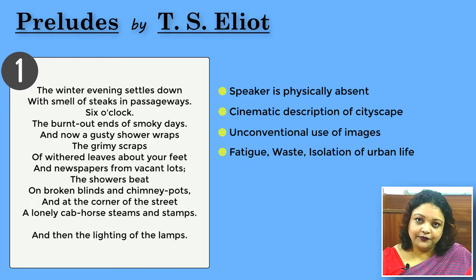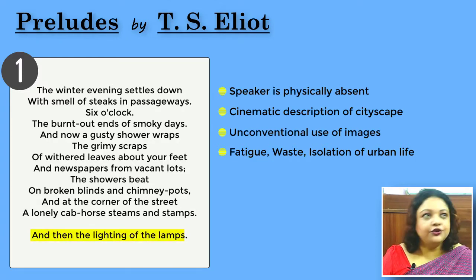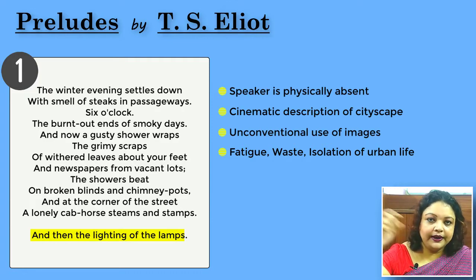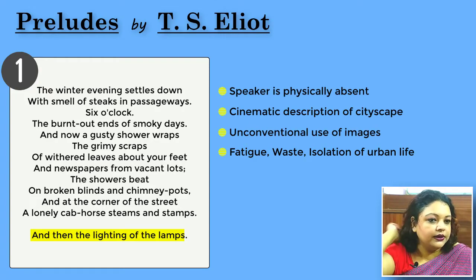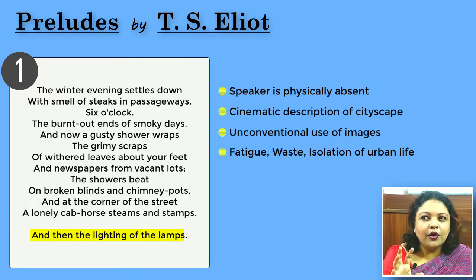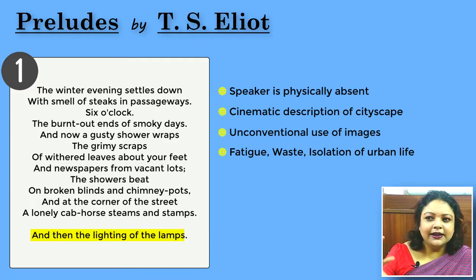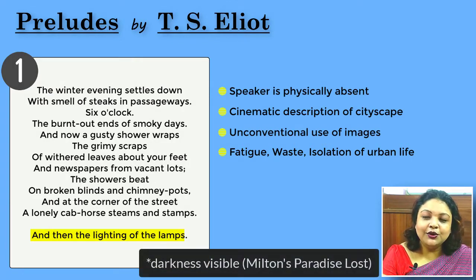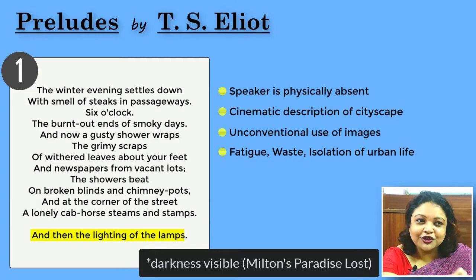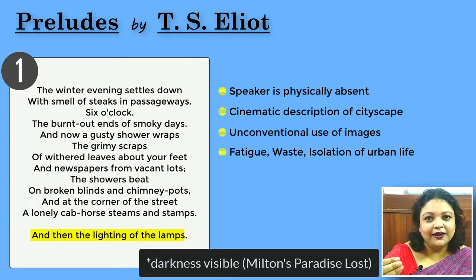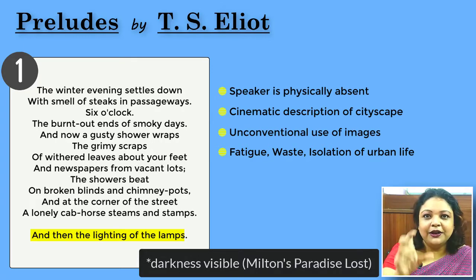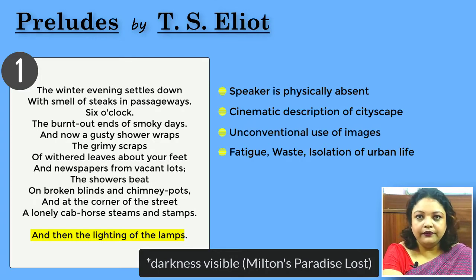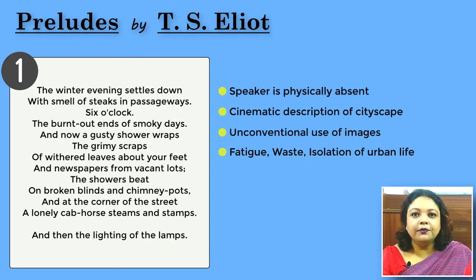And then the lighting of the lamps — during the evening time, the street lamps were lit up one by one. Those were usually gas lights, and they gave out a very fumey, smoky kind of light. It is almost similar to what Milton said in his description of hell — 'darkness visible, which serves only to illuminate suffering' — the regions of sorrow, doleful shade. Those spots of inferno which Milton brought through the expression 'darkness visible' haunt us when we read this.